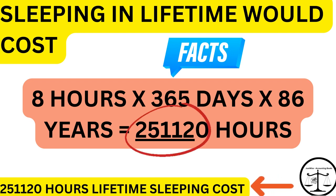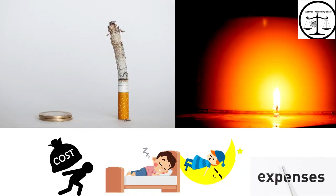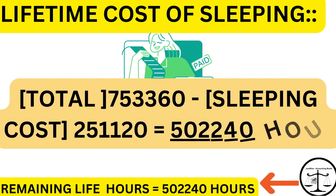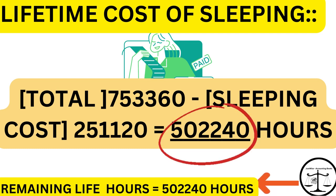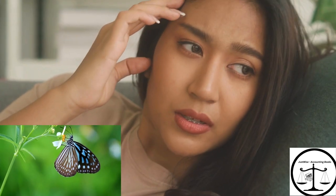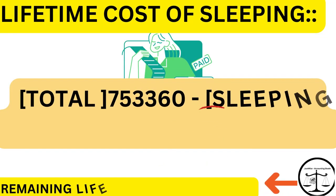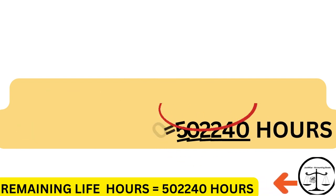Friends, if we remove 251,120 hours from our total of 753,360 hours, this will leave a person with 502,240 hours per person's life. So, after the sleeping cost of time, an average person would have 502,240 hours in their lifespan.